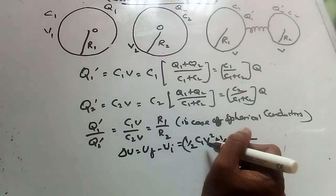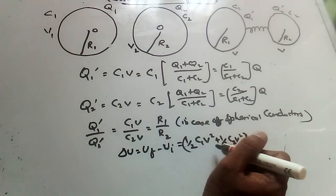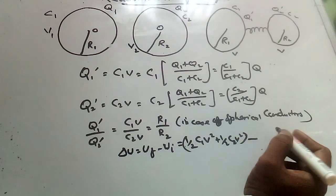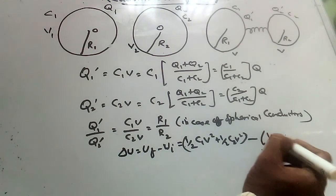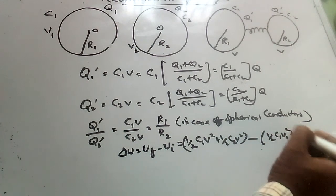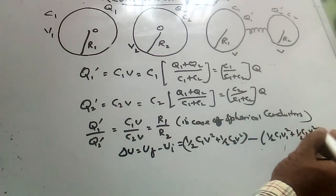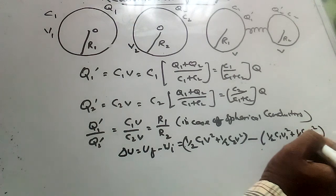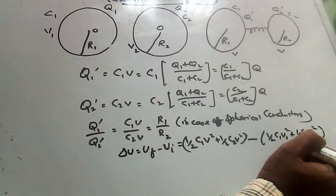Since common potential 1 by 2 C1 V square plus 1 by 2 C2 V square, that is before connection.